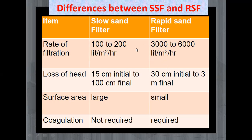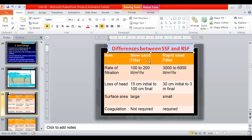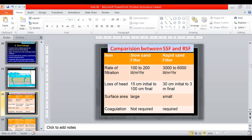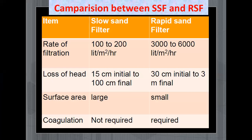Here you will see the comparison between slow sand filter and rapid sand filter. The comparison will be the more appropriate word to use. In the first column there are different items or points of comparison. The second column is for the slow sand filter and the third column is for the rapid sand filter.